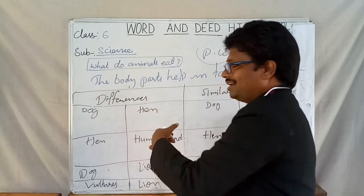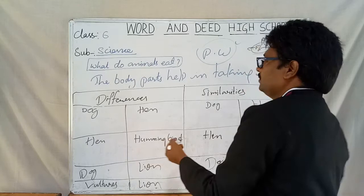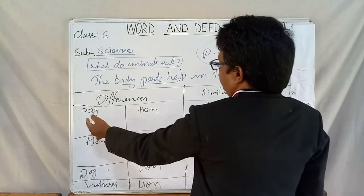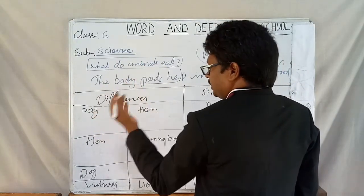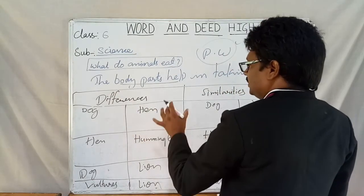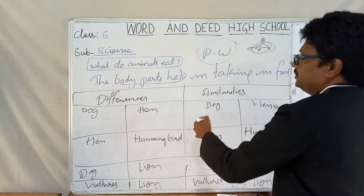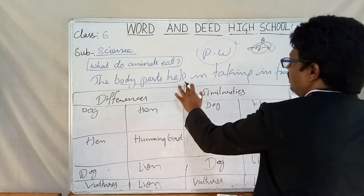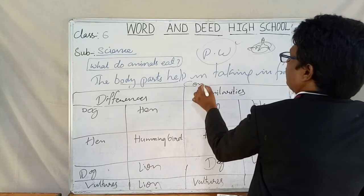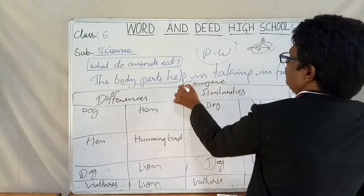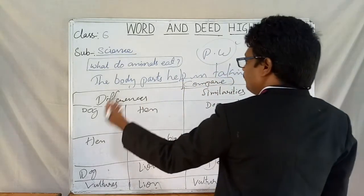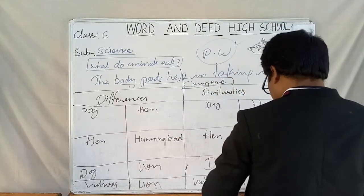What differences are you going to find? The body parts that help in taking food. What are the body parts helping the dog in taking food, and what are the body parts helping the hen in taking food? Like that, you have to write the differences and similarities. This project work is a comparison — you have to compare the body parts helping in taking food in different living things.